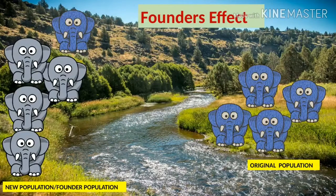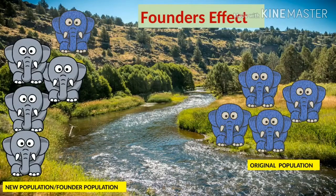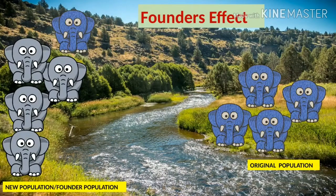In a second case, suppose one blue elephant also moves with the founder population. With the passing of time, the alleles of the blue elephant will either get eliminated or combine with other alleles to give rise to a new type of offspring. There is a high probability that the blue elephant will get eliminated, since the rarest trait is unlikely to persist. It may breed with another elephant and produce a different offspring — it is entirely a chance event and nothing can be predicted.